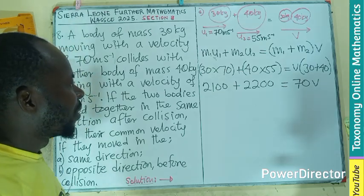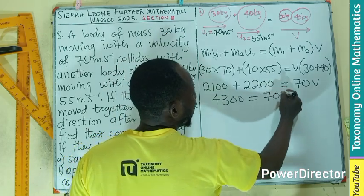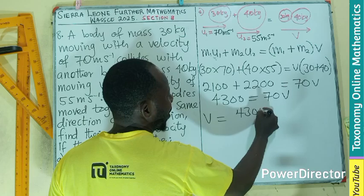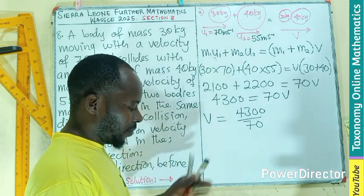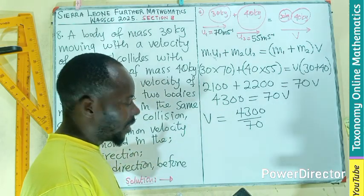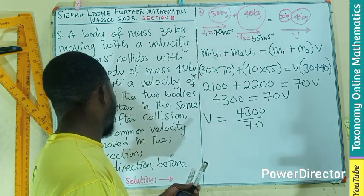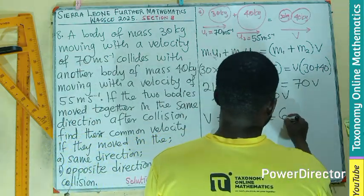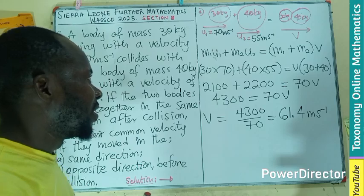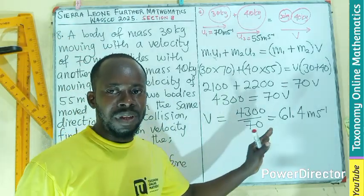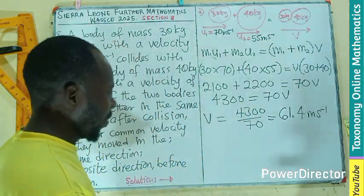Can we add this together? That would give us 4300. 4300 equals to 70V. So V would just be 4300 divided by this. We should be having somewhere 600 or something. So let's see on our calculator. 4300 divided by 70. So leaving the answer in one decimal place would give us 61.14 meter per second. So this is the common velocity at which they are all going to move in, that is in the same direction. You can see after collision, they are moving in the same direction.